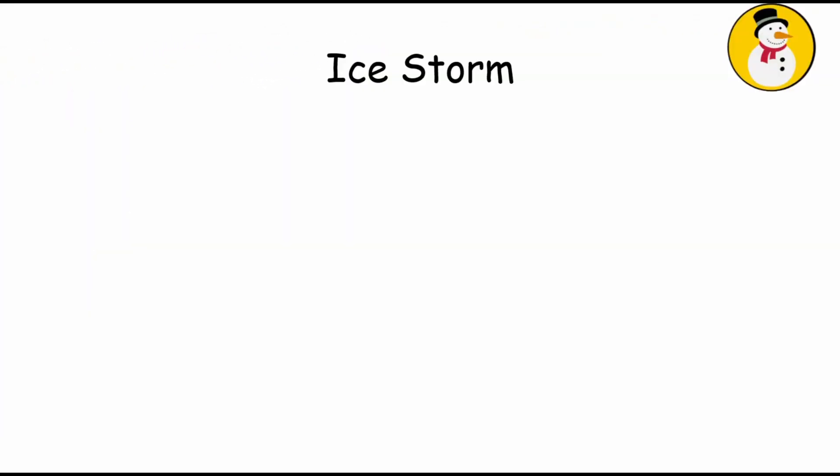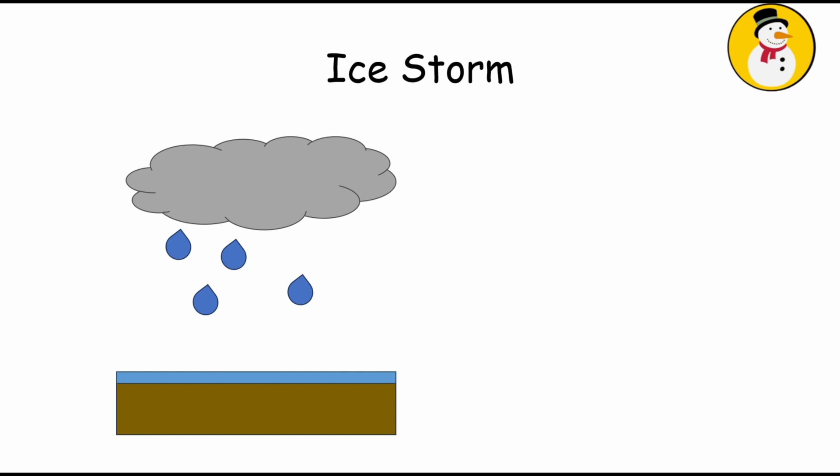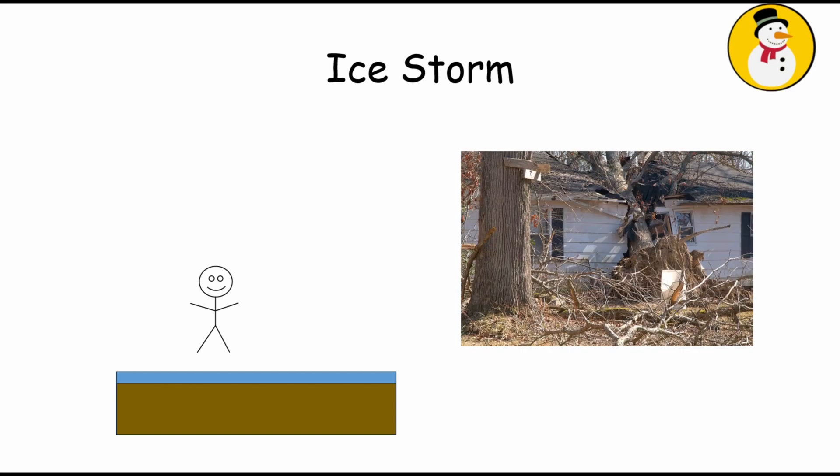An ice storm is a weather event characterized by the accumulation of freezing rain, which coats surfaces such as roads, trees, and power lines with a layer of ice. This occurs when rain falls from warm air and freezes upon contact with cold surfaces near the ground. The weight of the ice can cause tree limbs and power lines to break, further exacerbating the impacts of the storm. Cleanup efforts can be prolonged and challenging, as the ice can persist on surfaces even after the precipitation has ceased, posing ongoing risks to safety and mobility until temperatures rise sufficiently to melt the ice.